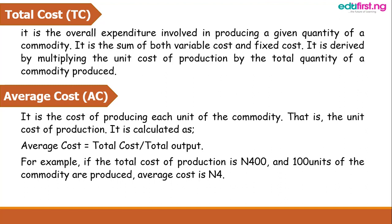Total cost is the overall expenditure involved in producing a given quantity of a commodity. It is the sum of both variable costs and fixed costs. It is derived by multiplying the unit cost of production by the total quantity produced. For example, if a firm produces 100 pairs of shoes and the unit cost is 1000 naira, the total cost is gotten by multiplying 1000 naira by 100 units.